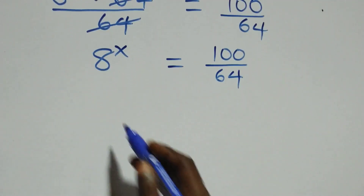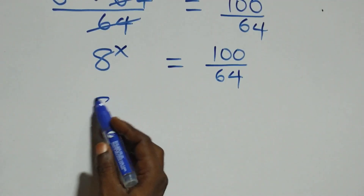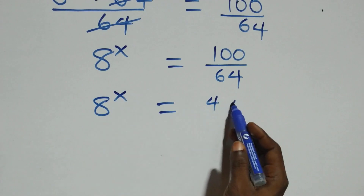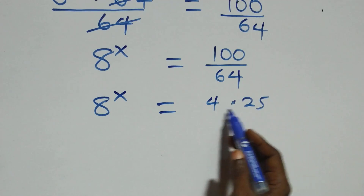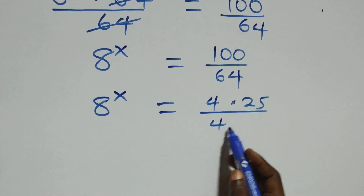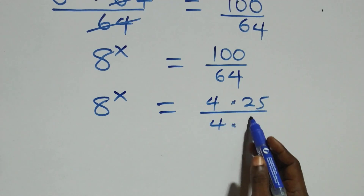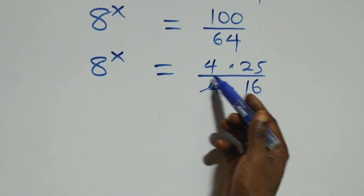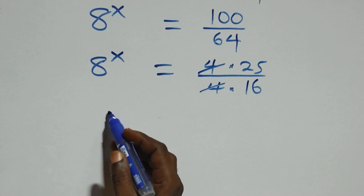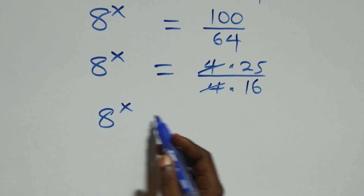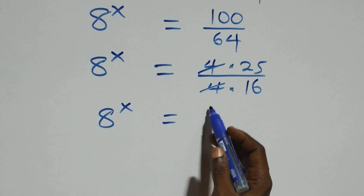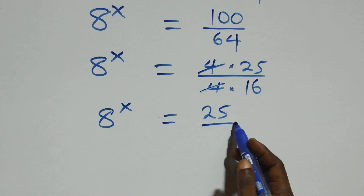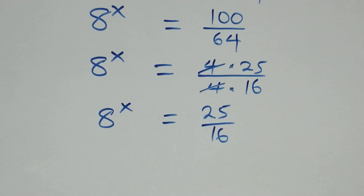The next step, we can write this as 8 raised to power x equals 4 times 25 over 4 times 16. The 4s cancel each other, and we have 8 raised to power x equals 25 over 16.